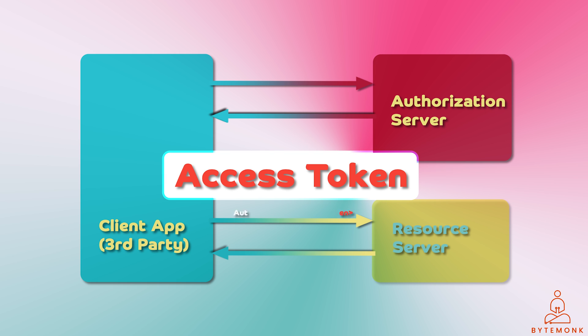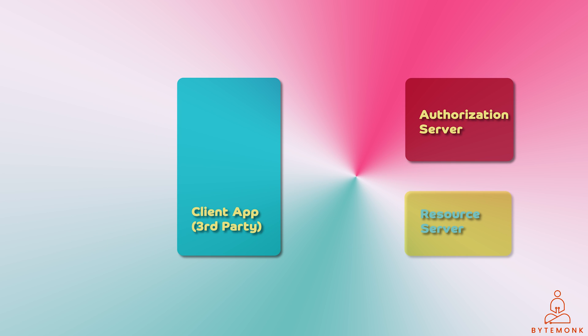For example, a bearer token, and the token's expiration time. The resource server then validates the access token and, if it is valid, grants the application access to the requested resources. Here is an example of how an access token is used in the OAuth 2.0 authorization code flow.